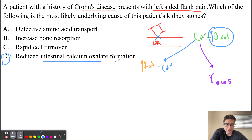Oxalate is left by itself because calcium is forming a complex with fat, and then the free oxalate travels to the urine where it can cause kidney stones.